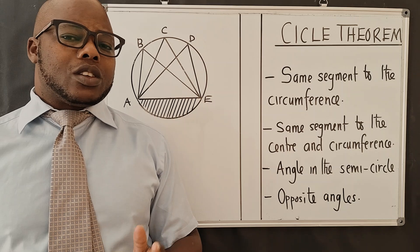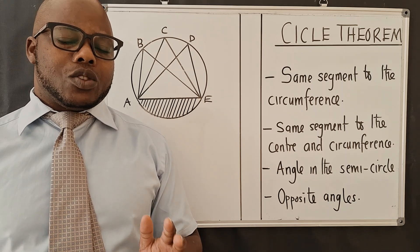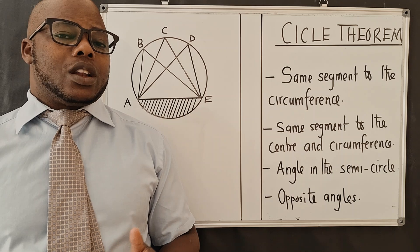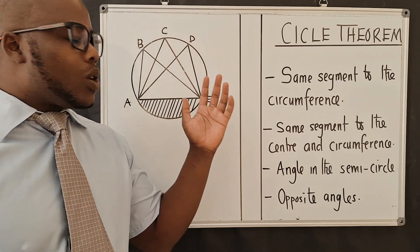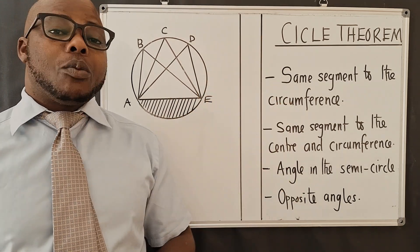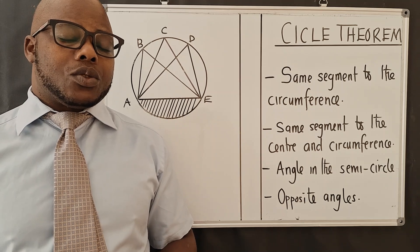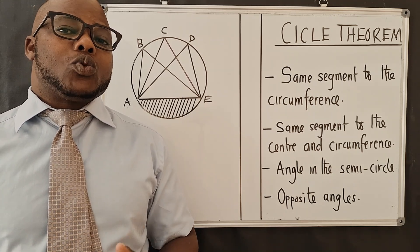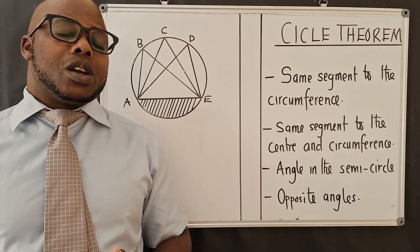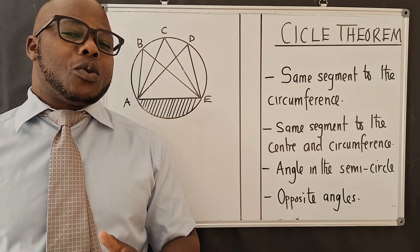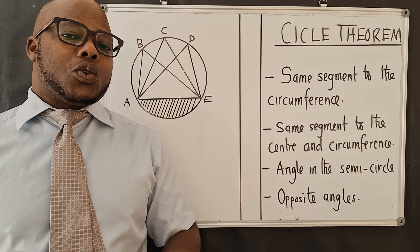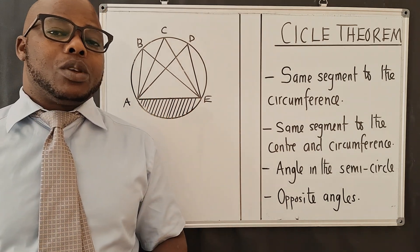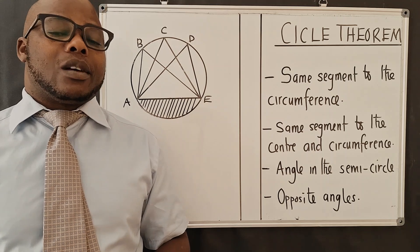If you did not watch lesson number one, please try to do so. In lesson number two, we will talk about these four properties you need to know when it comes to circle theorem. Please remember to watch lesson number three where we talk about the remaining four properties. In total there are eight properties that you need to know in order to answer any exam question.